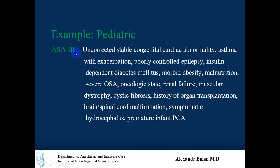Pediatric ASA 3 includes uncorrected stable congenital cardiac abnormality, asthma with exacerbation, poorly controlled epilepsy, poorly controlled or insulin-dependent diabetes, morbid obesity, malnutrition, active oncologic state, renal failure, muscular dystrophy, cystic fibrosis — many congenital disorders — as well as history of organ transplantation, brain or spinal cord malformation, symptomatic hydrocephalus, and premature infant by post-conceptual age.